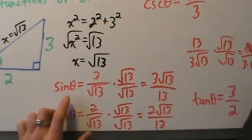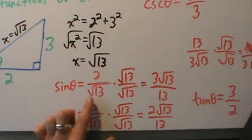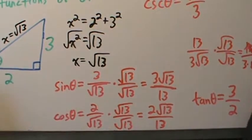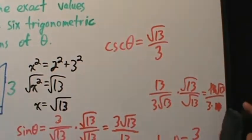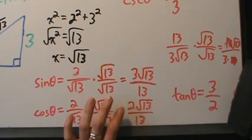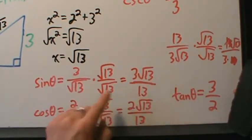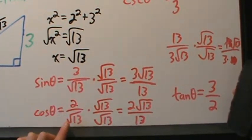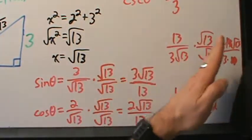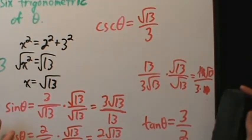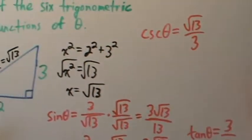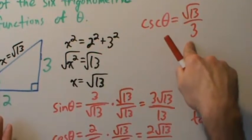So if we just leave sine of theta as 3 over root 13 without rationalizing, we get the simple answer for cosecant of theta directly. The key point here is that cosecant is simply the reciprocal of sine.